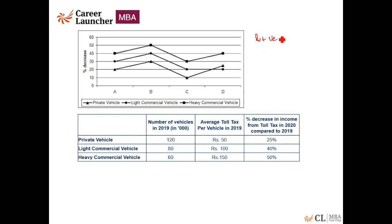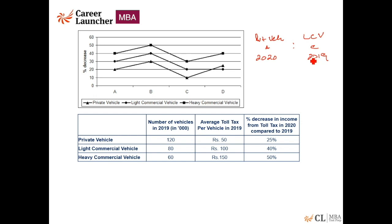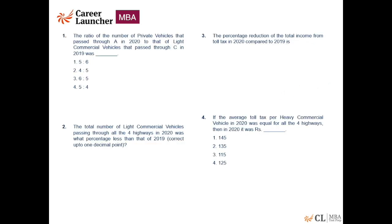Question 1: ratio of private vehicles through A in 2020 to LCVs through C in 2019. In 2019, total LCVs were 80,000, equally divided across four highways, so through C it's 20,000. Private vehicles through A in 2019 were 120,000 divided by 4, which is 30,000. In 2020 there's a 20% reduction, so 80% of 30,000 is 24,000. The answer is 24 to 20, which simplifies to 6 to 5.